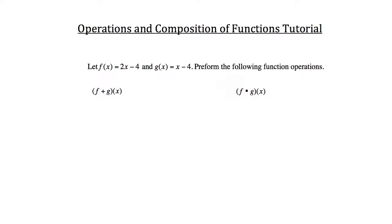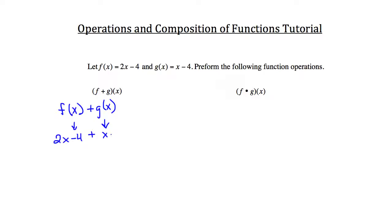Let's let f of x equal 2x minus 4 and g of x equal x minus 4, and perform the following function operations. For f plus g of x, we plug in f of x which is 2x minus 4, plus g of x which is x minus 4. So 2x plus x is 3x, and negative 4 plus negative 4 is negative 8, giving us 3x minus 8.